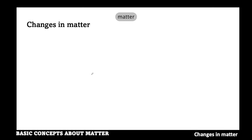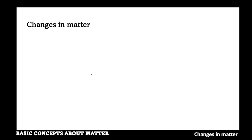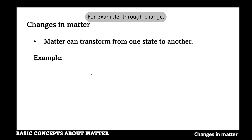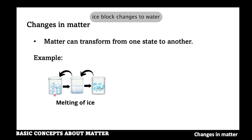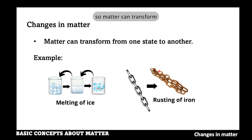Matter can transform from one state to another. For example, an ice block changes to water and water changes to steam. Likewise, the shiny surface of matter can change to form rust. So matter can transform from one form to another during changes.